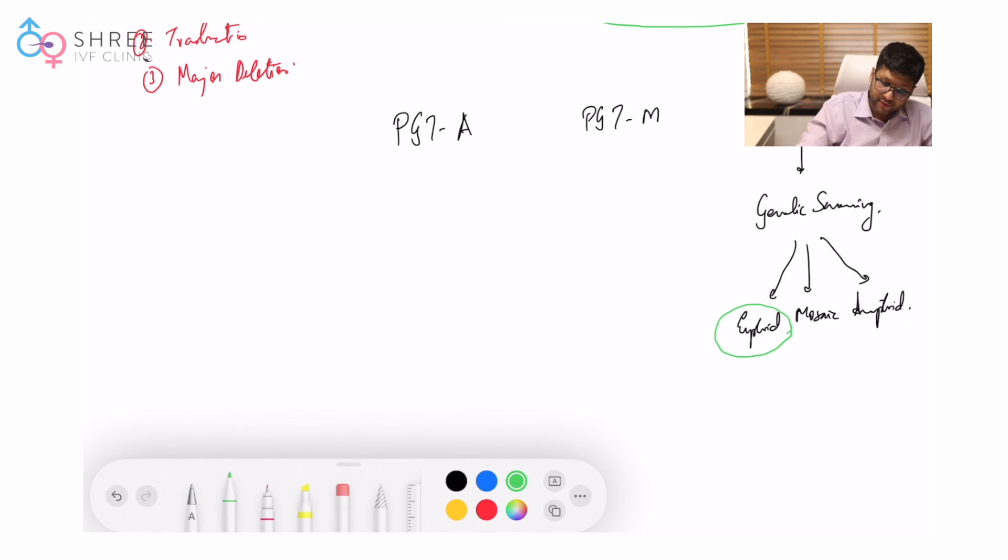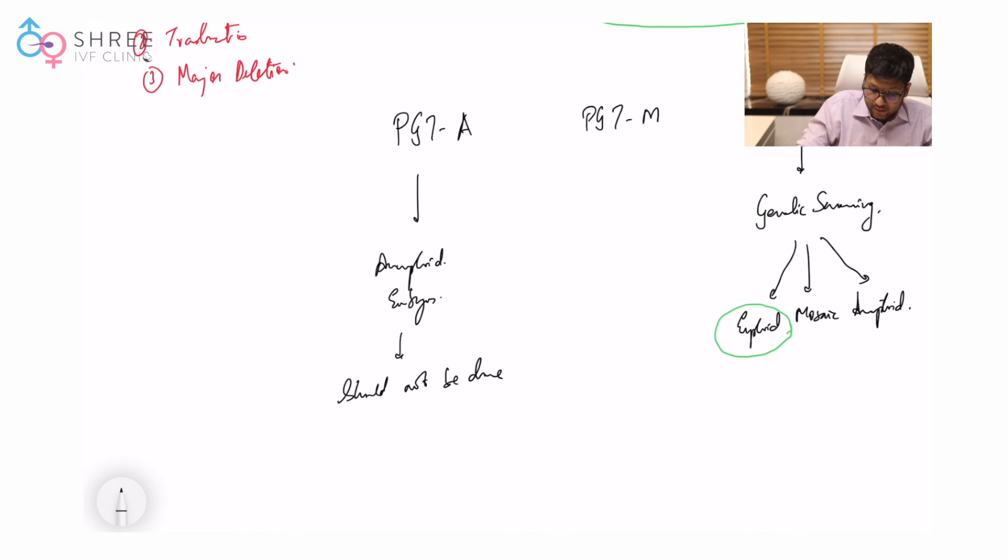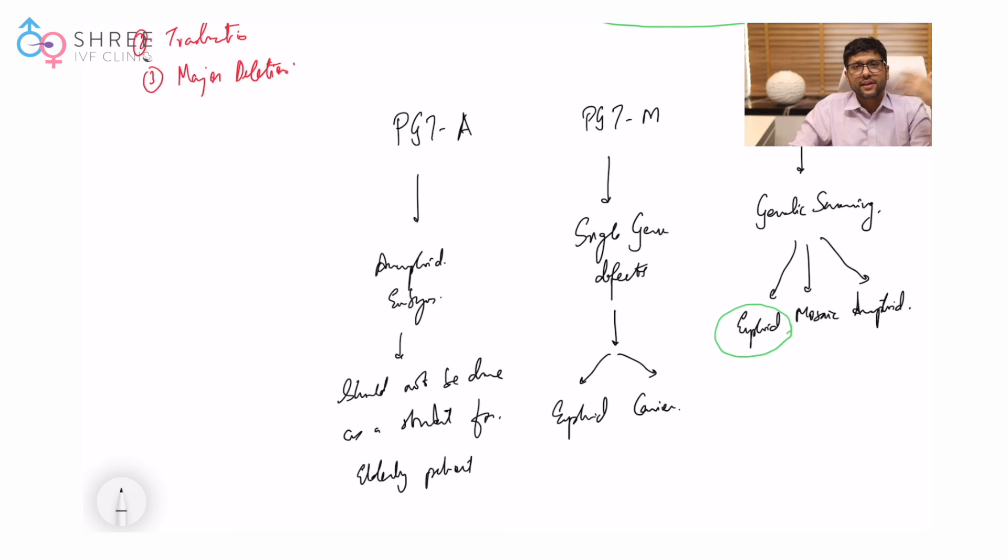PGTA is a test that helps in detection of aneuploid embryos only. Standard PGTA testing for embryos has no role - it should not be done as a standard even for old or elderly patients. PGTM helps in detecting single gene defects. The single gene defect is identified from the couple who undergo whole genome or exome sequencing. A probe is matched and applied over the embryo where you can understand which embryo is euploid or which embryo is a carrier.